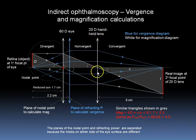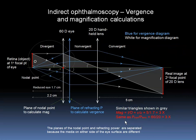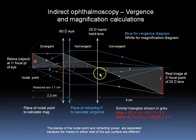If we were to use a 90 diopter handheld lens, the formula would show that 60 over 90 gives 2/3 magnification, which is minification. This 90 diopter lens is often used together with a slit lamp to view the retina directly. The 2/3 number would then be multiplied by the magnification of the slit lamp optics to get the overall magnification. The trade-off is: with a 20 diopter lens, we get more magnification and somewhat less field of view; with a 90 diopter lens, we get a larger field of view but less magnification.